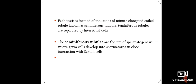The process of spermatogenesis occurs in the testes. In vertebrates, a pair of testes are present, attached to the dorsal body wall by a connective tissue membrane called mesorchium. Each testis is formed of thousands of minute, elongated, and coiled tubules. Such coiled tubules present inside the testes are called seminiferous tubules.